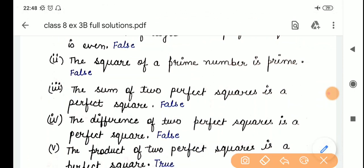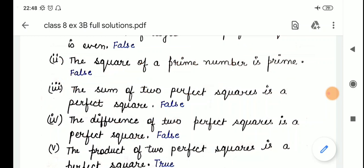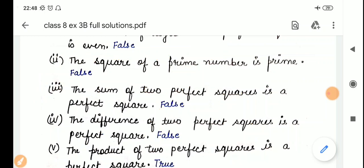Now, coming to the third part. The sum of 2 perfect squares is a perfect square. Let's take 25 is a perfect square plus 36 is also a perfect square. So, when we add this, we will get the answer 25 plus 36. 6 and 5 is 11, 1 carries 61. So, is 61 a perfect square? No. 61 is not a perfect square. So, it is false.